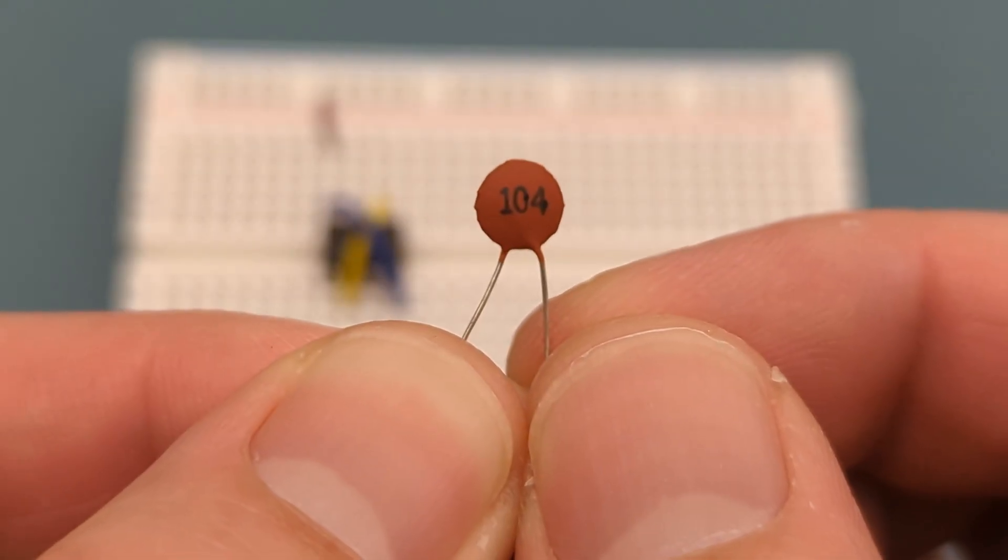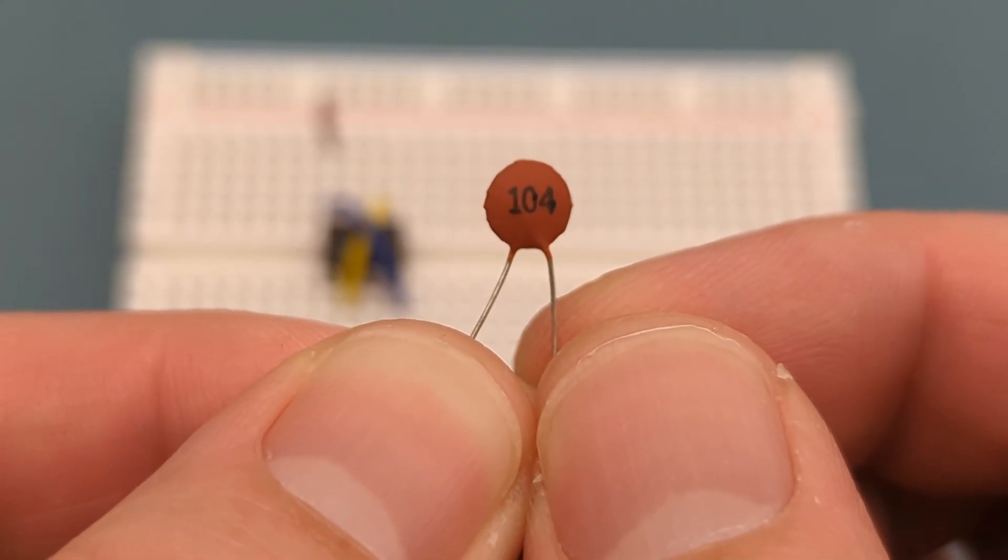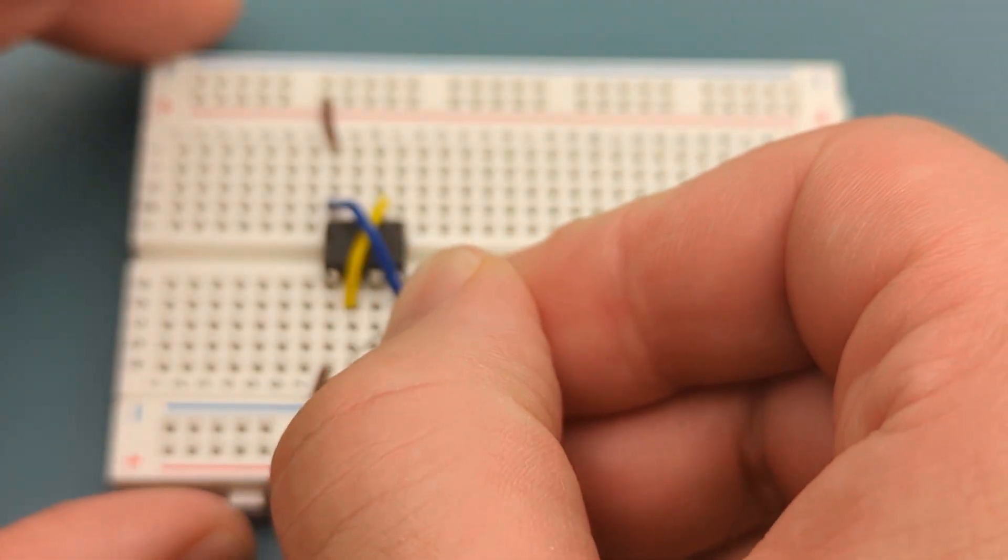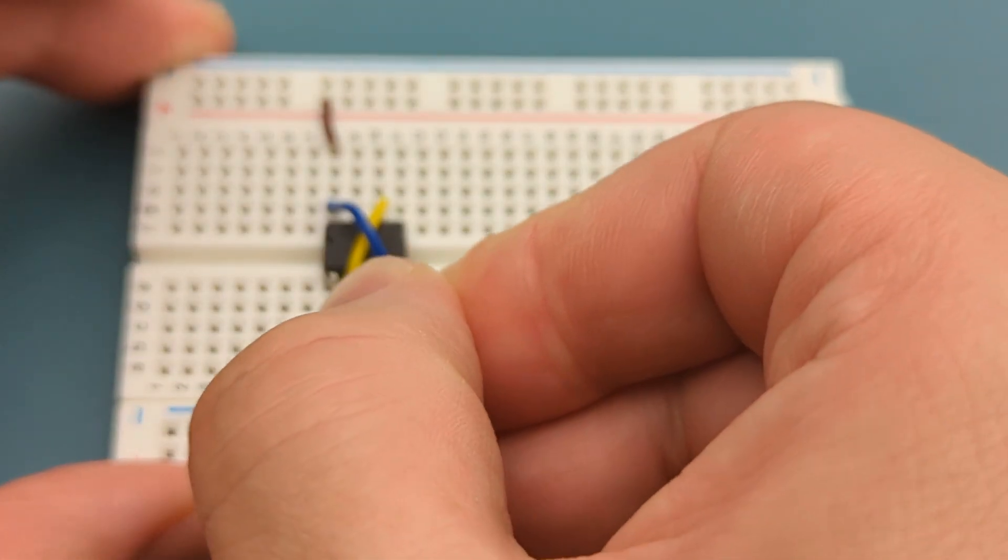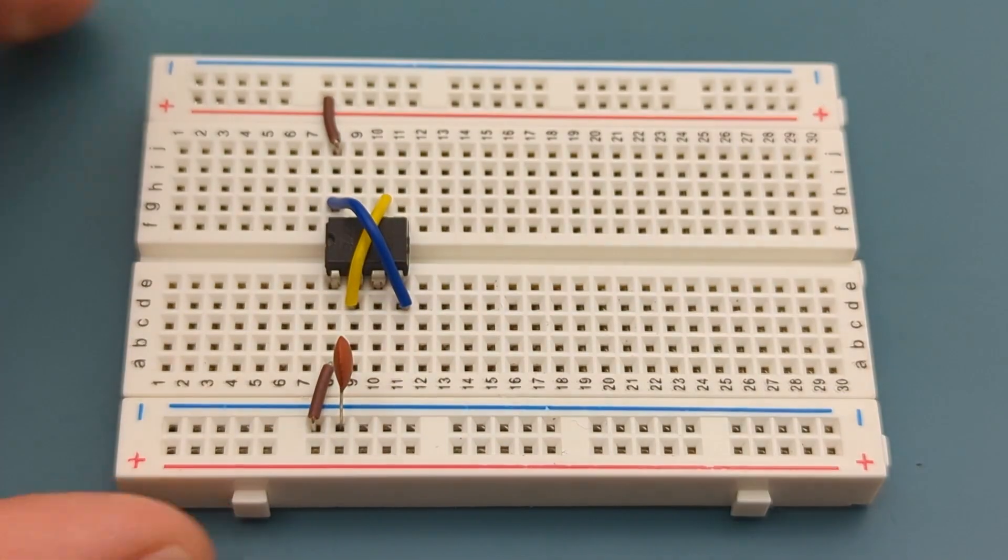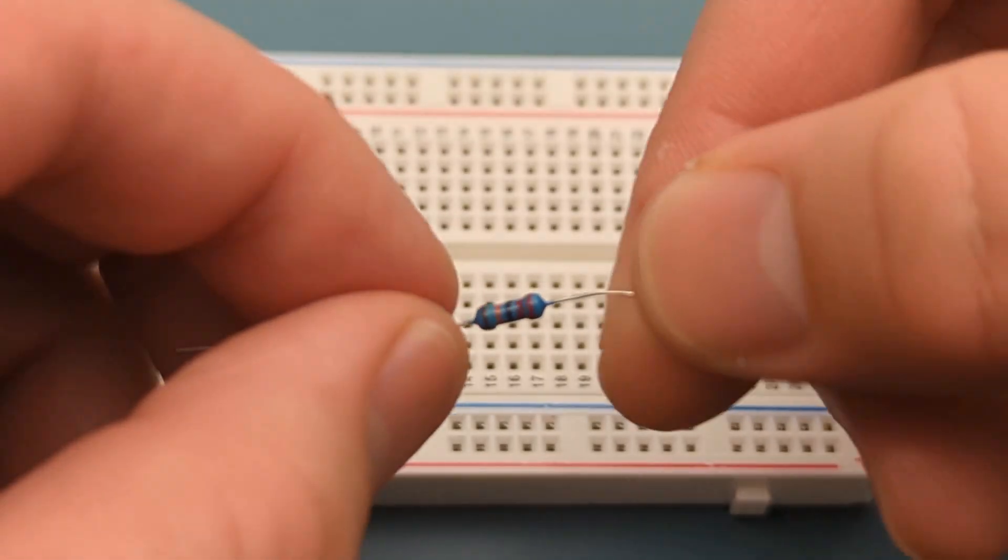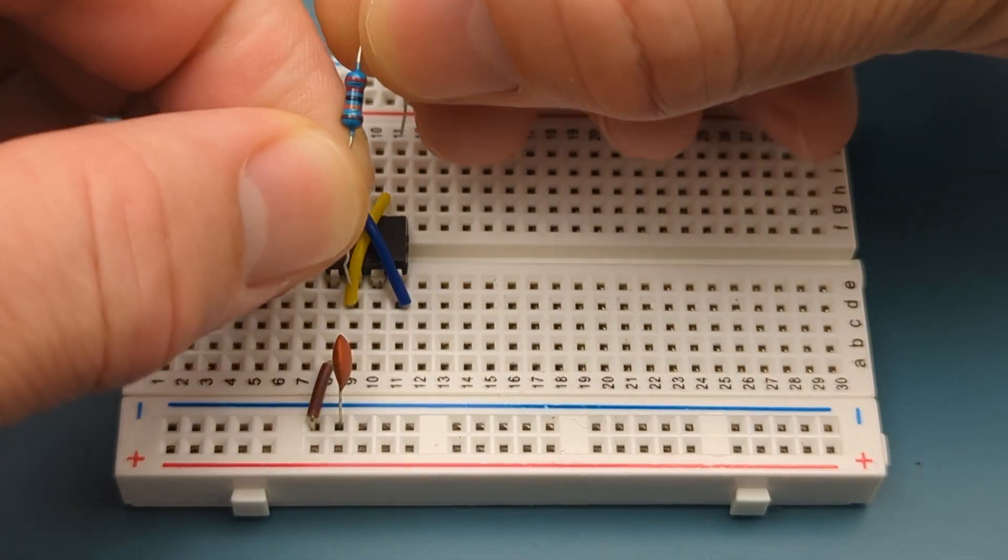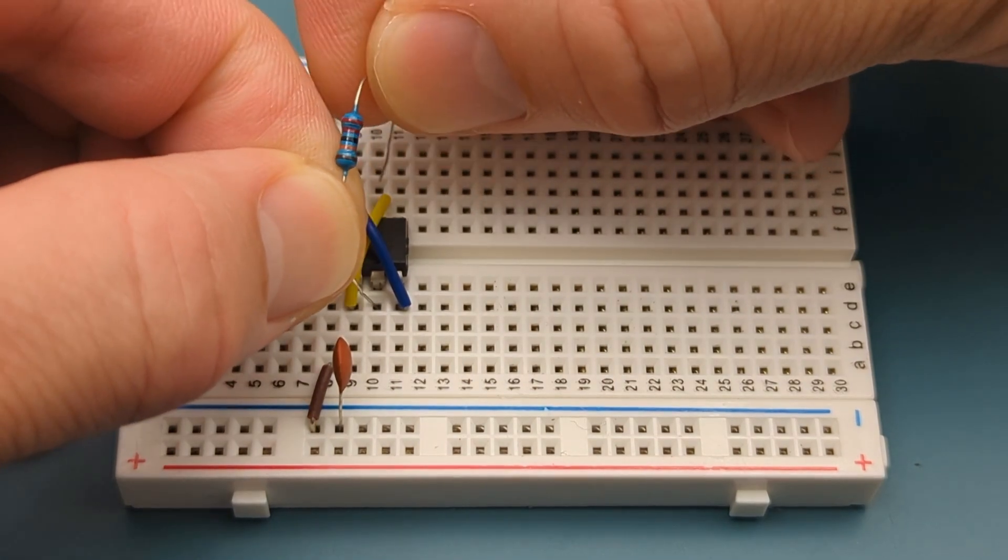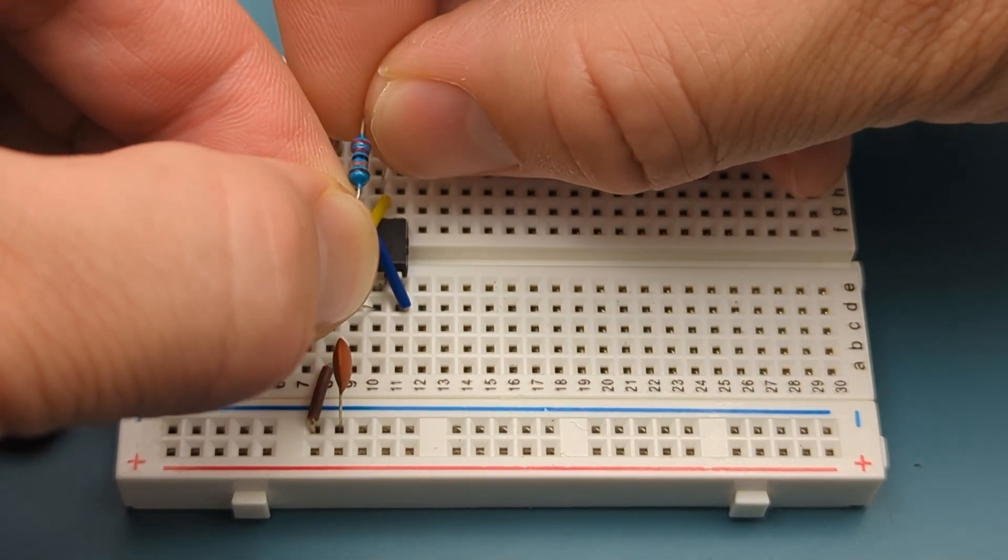Insert a 0.1 microfarad capacitor into pin 2 or trigger and the negative rail. Since ceramic capacitors don't have polarity, you can insert either leg into pin 2. Bend the ends of a 220 kilo ohm resistor. Insert the 220 kilo ohm resistor into pin 3 or output in pin 6 or threshold.